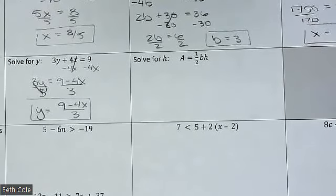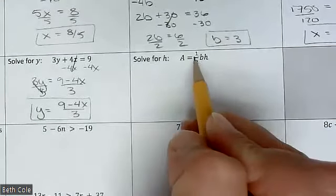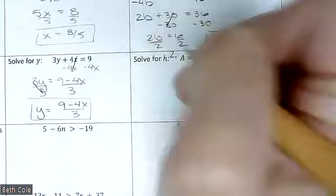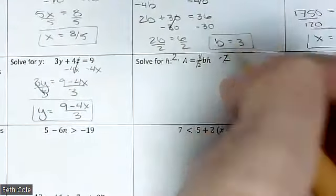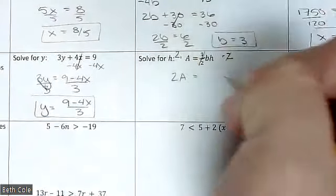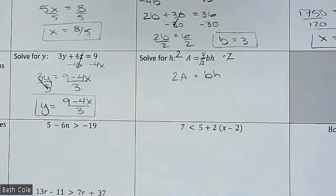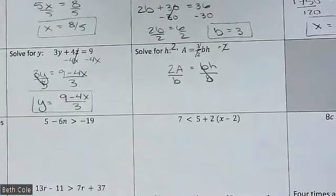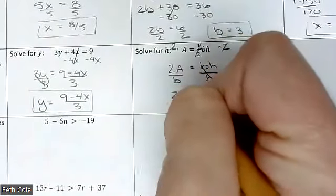And then we have one more of these. How do you cancel out a one half? What does this bar mean? Divide. So we would want to multiply — multiply both sides by 2, that's what will cancel it out. That's going to give you 2a equals b times h. What variable are we trying to get by itself? H. So you would divide by b, and then leave it alone — literally just recopy it. This is your answer.